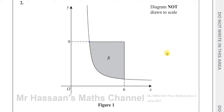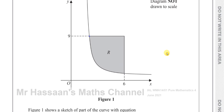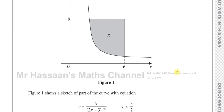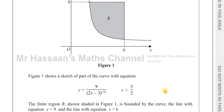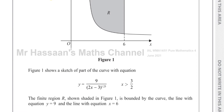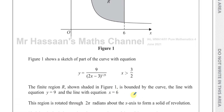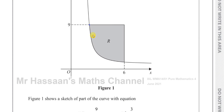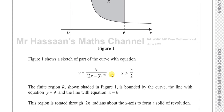This question is all about volumes of revolution, and there's a little twist which I haven't really seen before. It says figure one shows a sketch of part of the curve with equation y equals 9 over (2x minus 3) to the power of 5 over 4, where x is greater than 3 over 2. Of course, x can't equal 3 over 2 because that would be undefined — you'd have a zero denominator, so that would be an asymptote. This is only defined for x greater than 3 over 2.